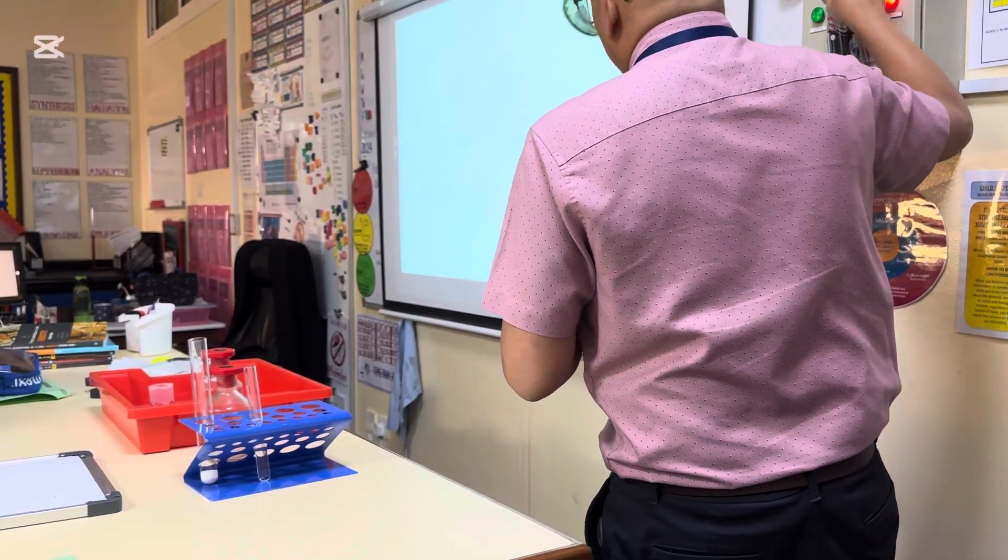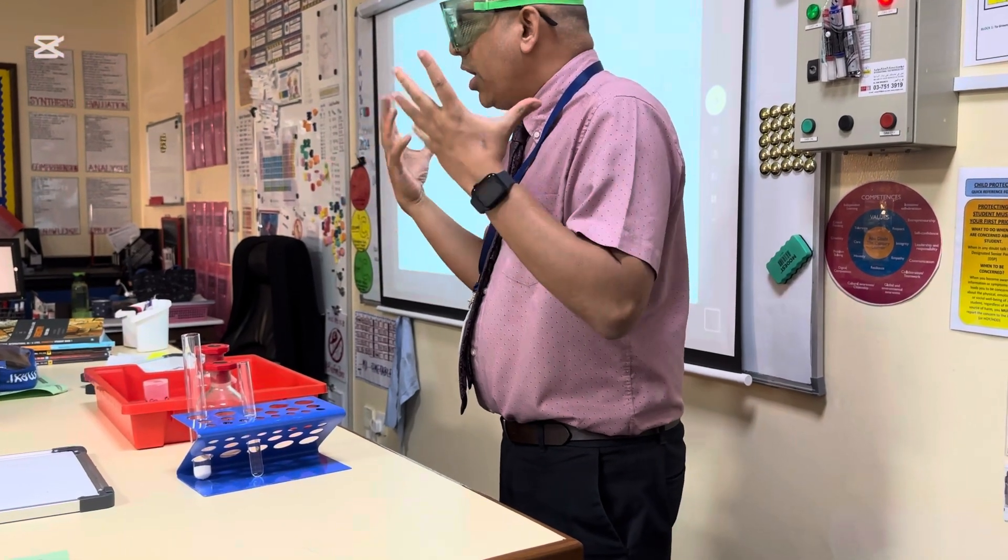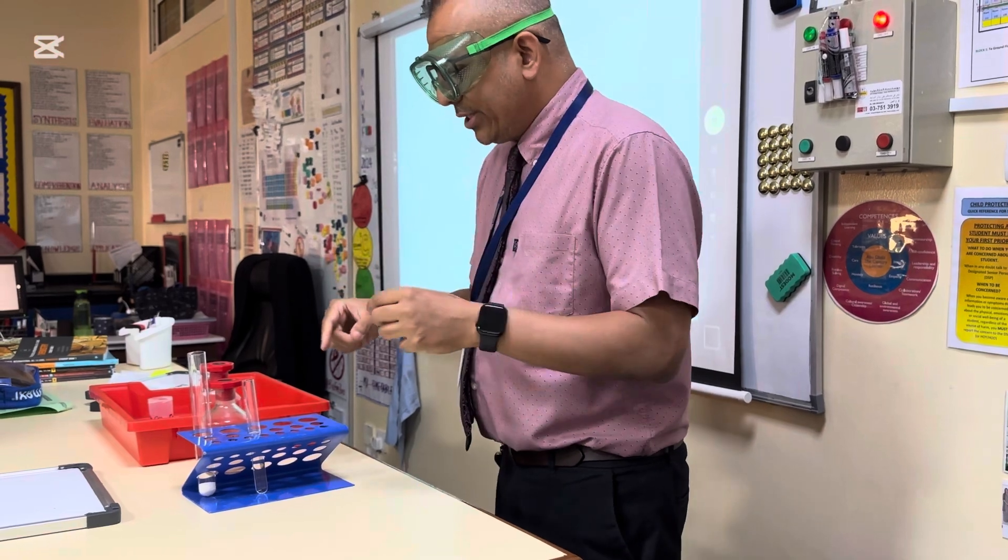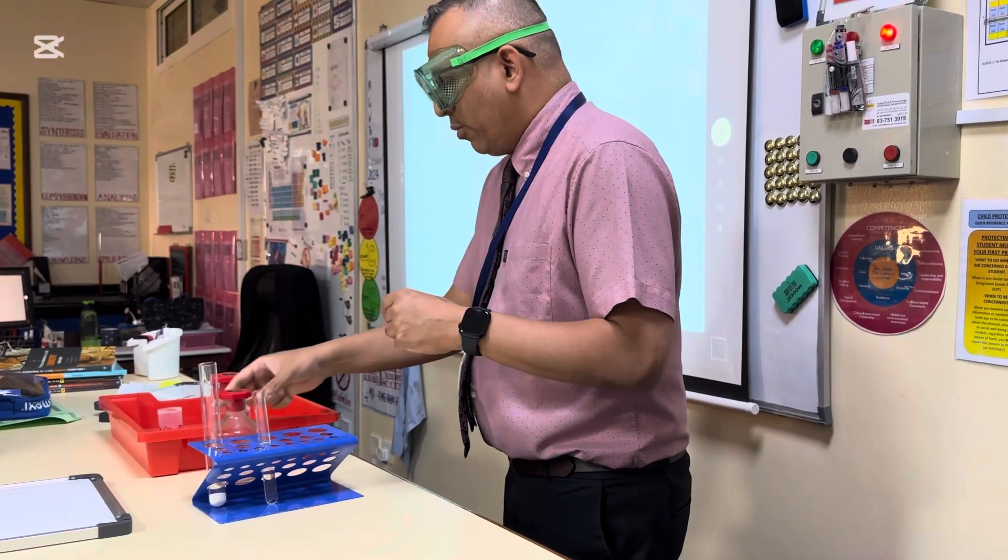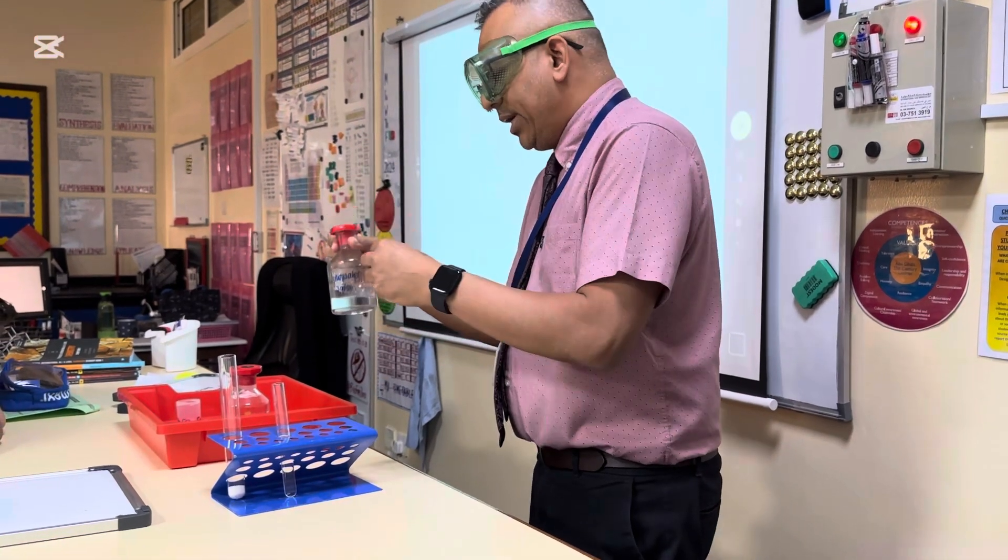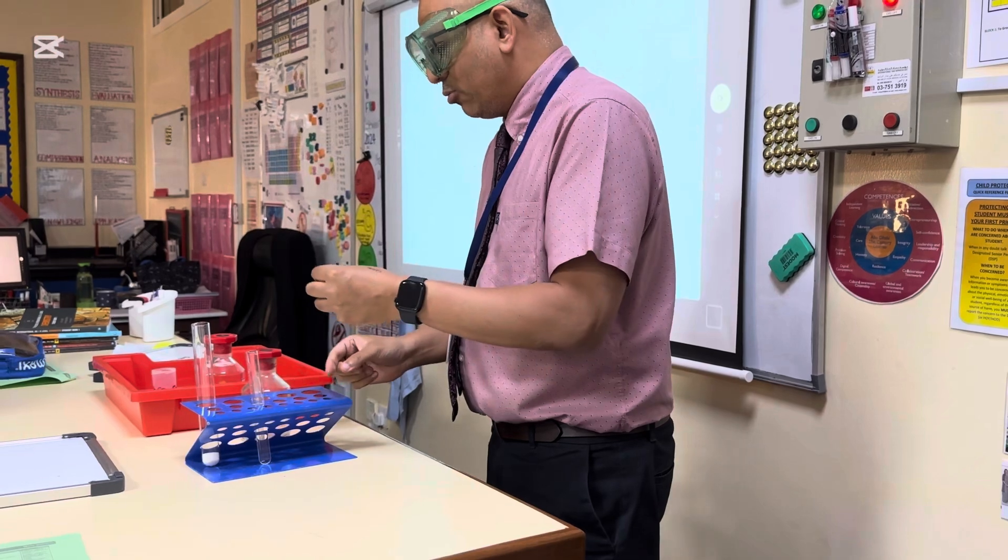So when we actually do the chemical test, we will just see bubbles and we can't identify that this is carbon dioxide, right? So what we do is we have a second reaction happening, where we use a reagent called lime water. And we know, as chemists, if we bubble carbon dioxide through lime water,